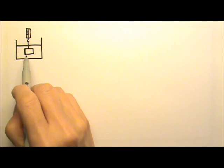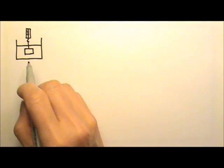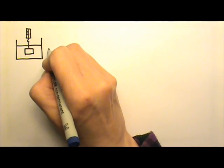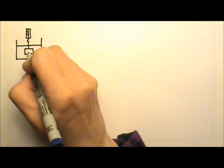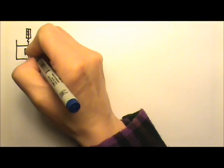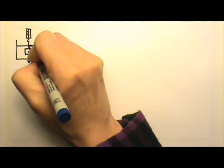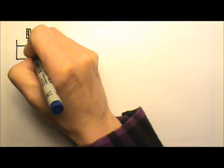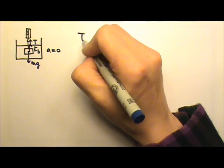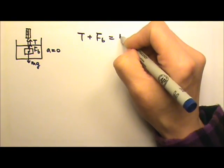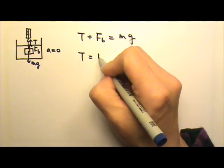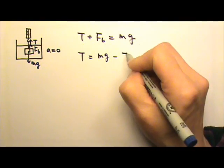We can also have a block that is completely submerged in a fluid. If this object is just suspended there, the acceleration is zero. The force diagram has mg, and since it is touching the fluid, we get a buoyant force. It is also touching the string, so there is a tension from the string. Acceleration being zero means the upward forces added together equal the downward force, so the tension is mg minus the buoyant force.